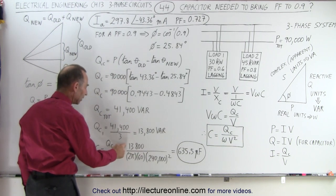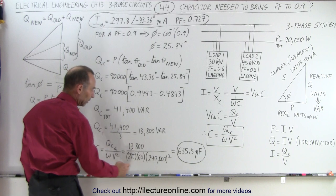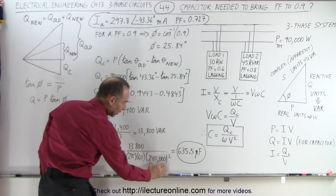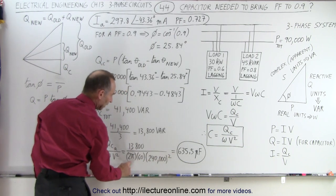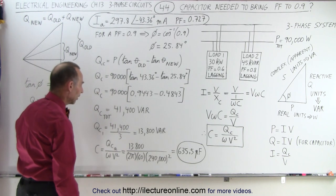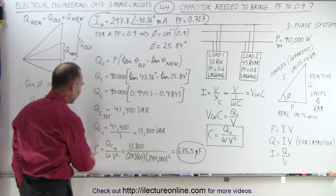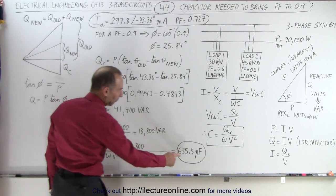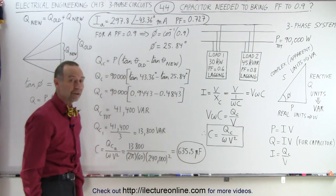If we take that value, divide it by omega and V squared, remember the voltage was 240 volts on the circuit, we square that, 2 pi times the 60 hertz frequency on the circuit, that gives us a capacitor requirement of about 635 picofarads.